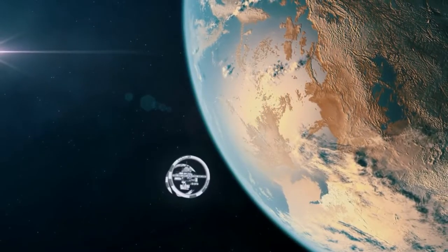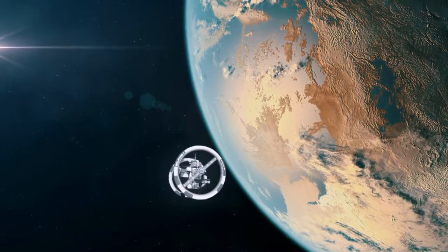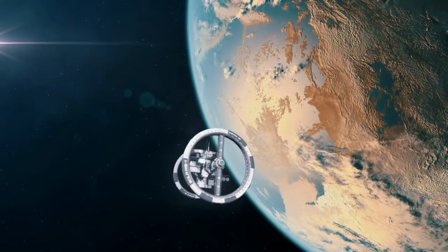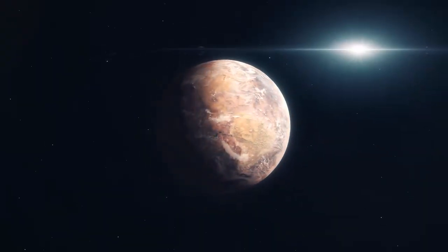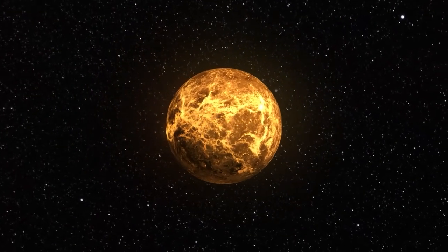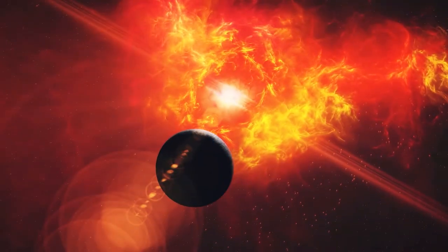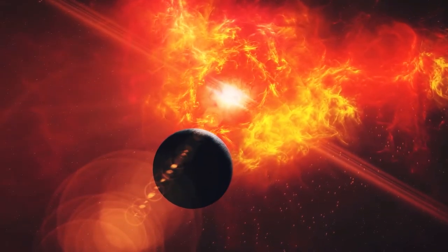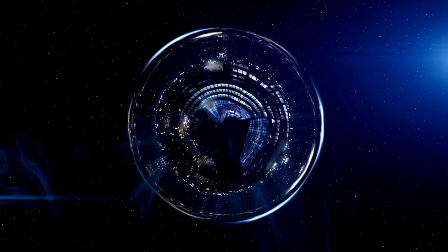That is assuming, of course, that Proxima Centauri b or any other Earth-like planet surrounding a red star actually possesses an atmosphere. Numerous red dwarf stars are notoriously erratic and capable of ejecting enormous amounts of radiation and charged particles into space. A nearby planet's atmosphere may be stripped away by that type of stellar weather, which would be very disastrous for any alien life.